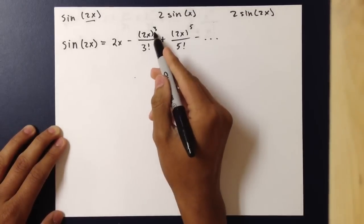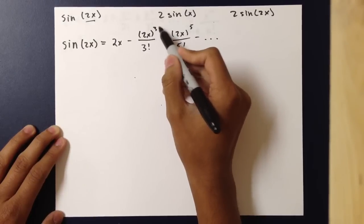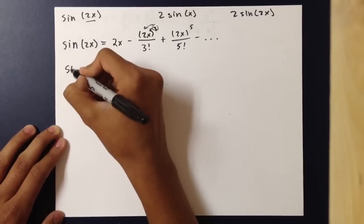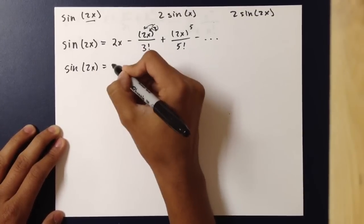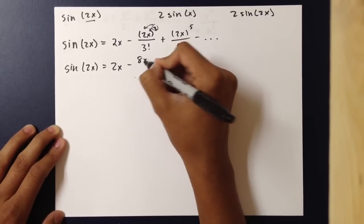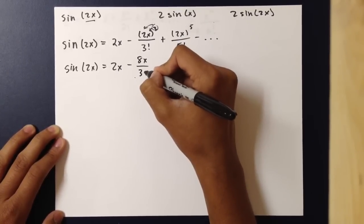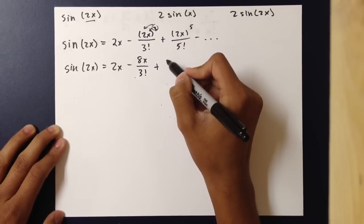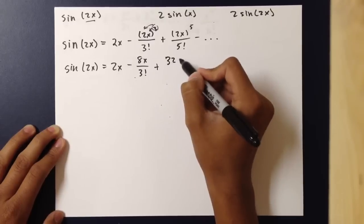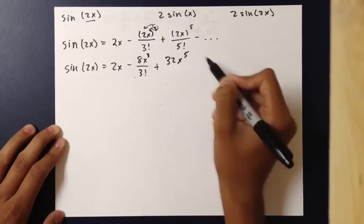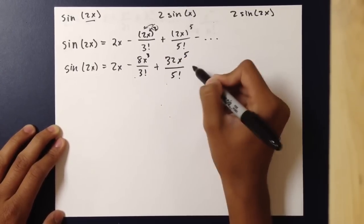This would simplify as we distribute the powers, and it would become: sine of 2x equals 2x minus 8x cubed over 3 factorial, plus 32x to the fifth over 5 factorial, and so on.